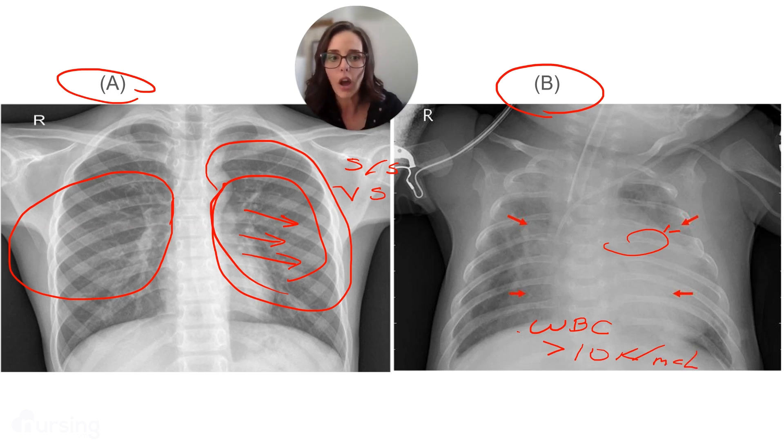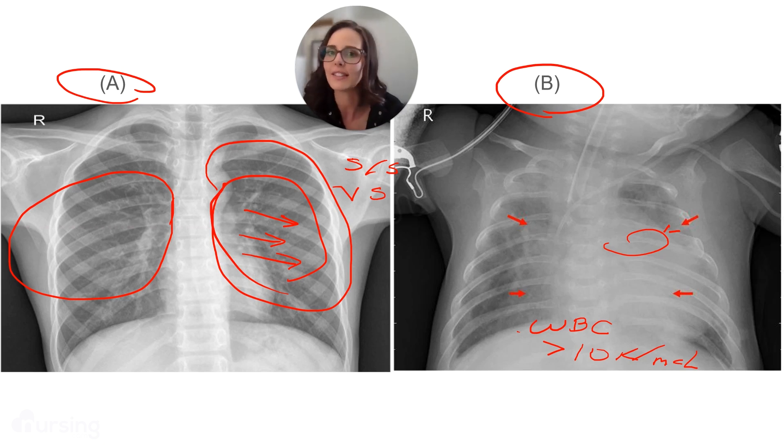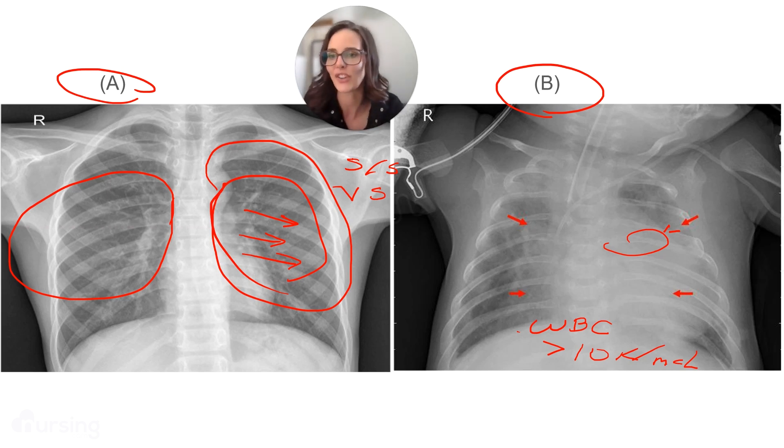Common causes of pneumonia in the hospital are from aspiration and from artificial ventilation.